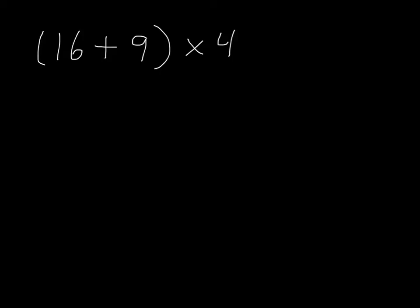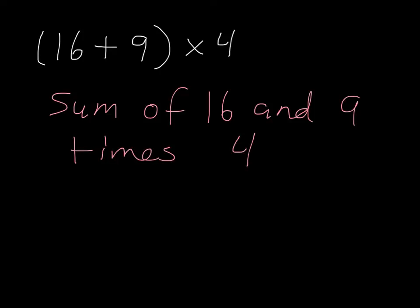Now, when we get into a problem like this one, it's easy to say sixteen plus nine times four. But it's not clear what order I'm doing. So really, when I look at this problem, I want to say that we are doing the sum of sixteen and nine times four. When I say that out loud, as the sum of sixteen and nine times four, or think it in my head, it tells me exactly where the parentheses need to be. So I know that sixteen plus nine is twenty-five times four, and that is one hundred.